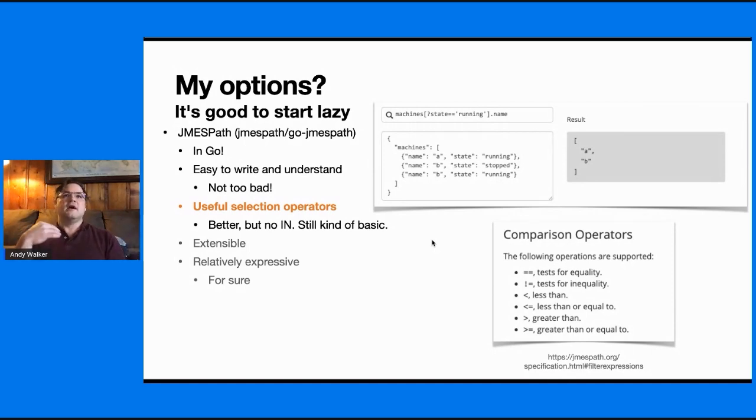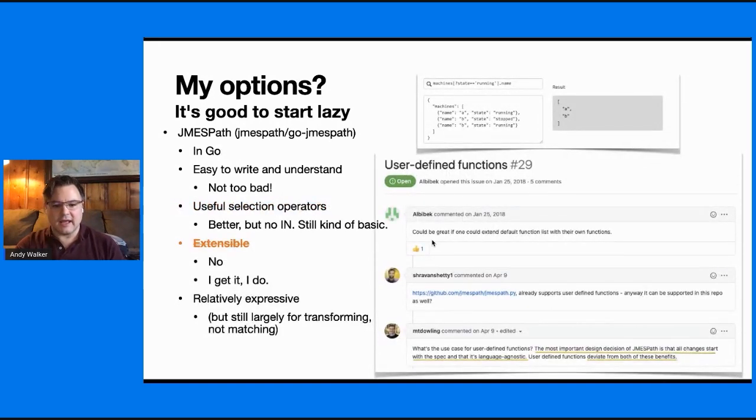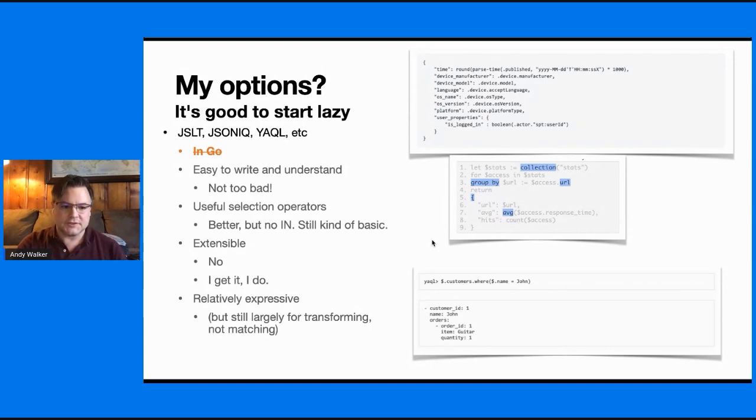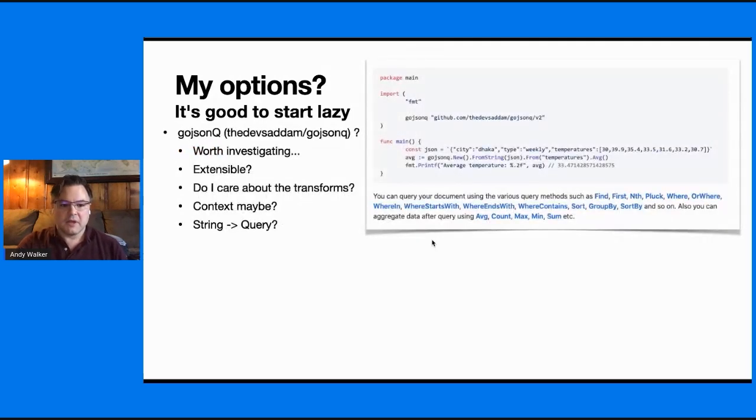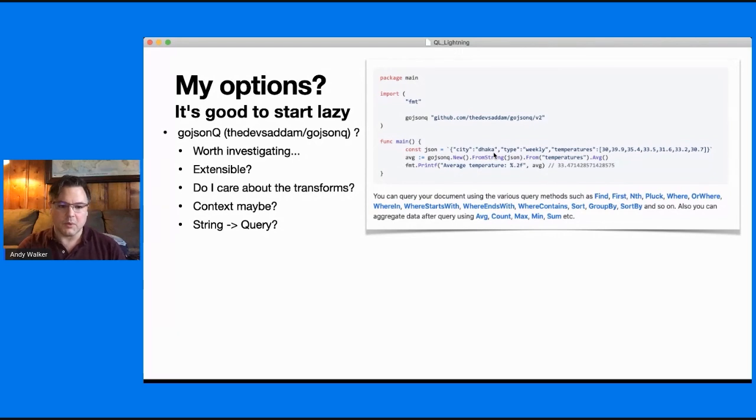It's not extensible. I get it, right? The idea is to be a spec. And if your spec is extensible, is it really a spec? And the rest is JSLT, JSONIQ, YIQL. They're not in Go. So I guess that's that. GoJSONQ is something I found fairly recently. It's worth investigating. I don't know too much about it yet.